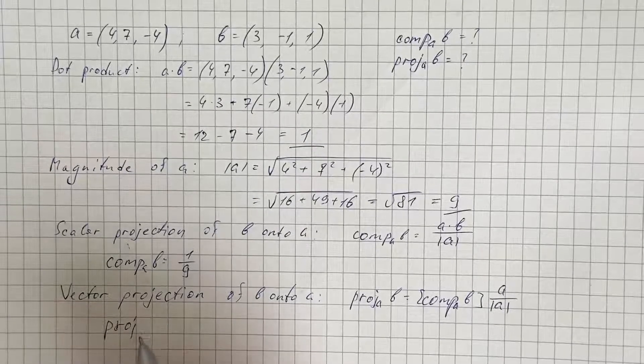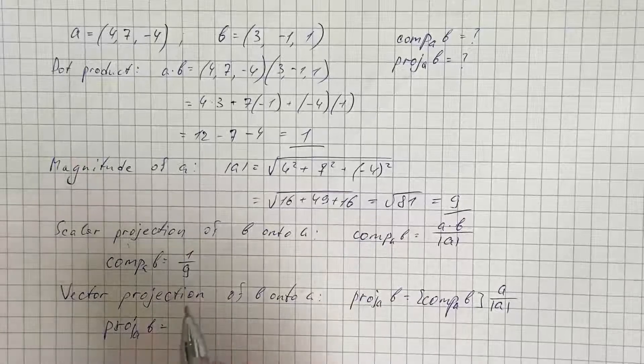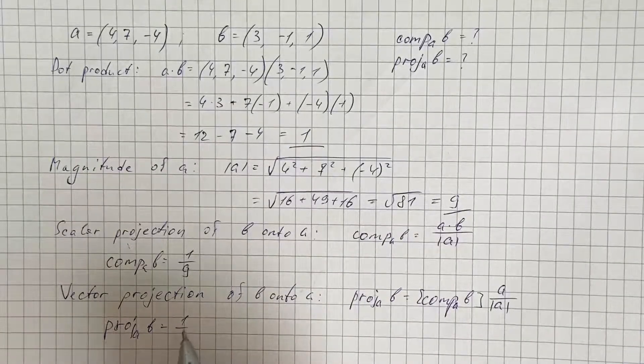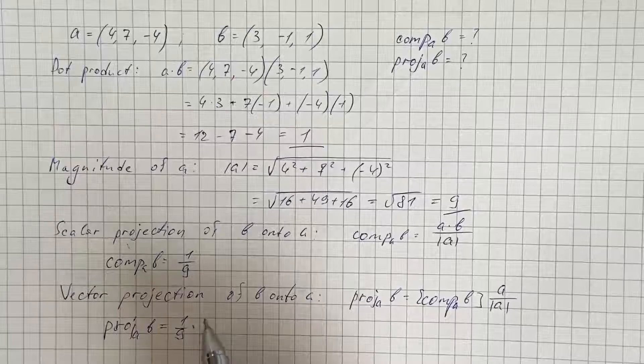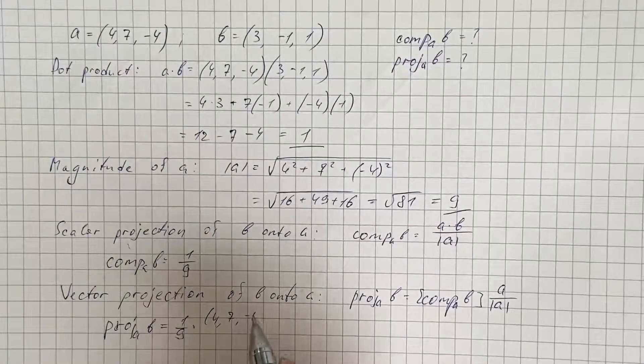So we substitute our values. And again that scalar projection equals 1 over 9. Then multiply it by vector a which is 4, 7, negative 4.